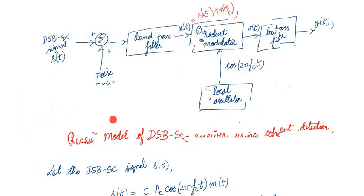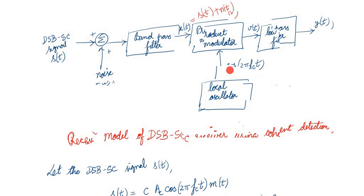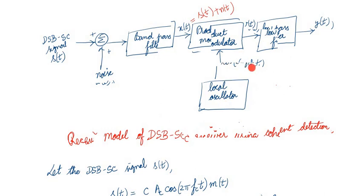In coherent detection, on the receiver side we use a local oscillator producing a carrier signal — an oscillating signal at the same modulating carrier frequency. While modulating we use a frequency of fc, and in demodulating on the receiver side we also use a cosine signal of frequency fc.